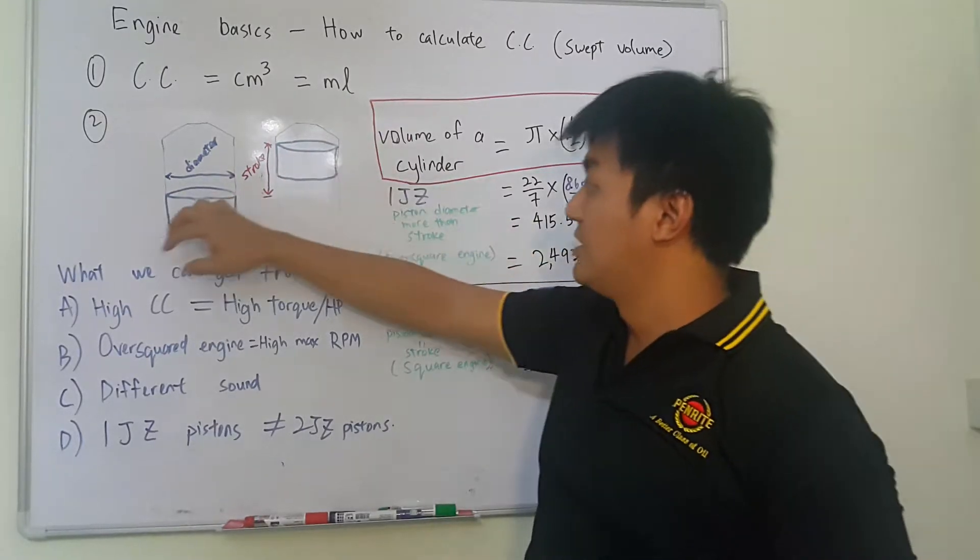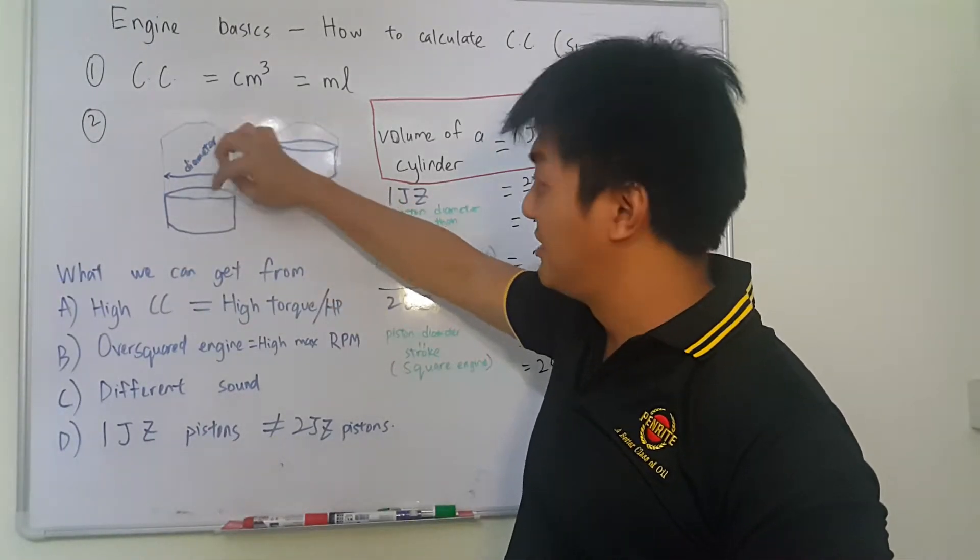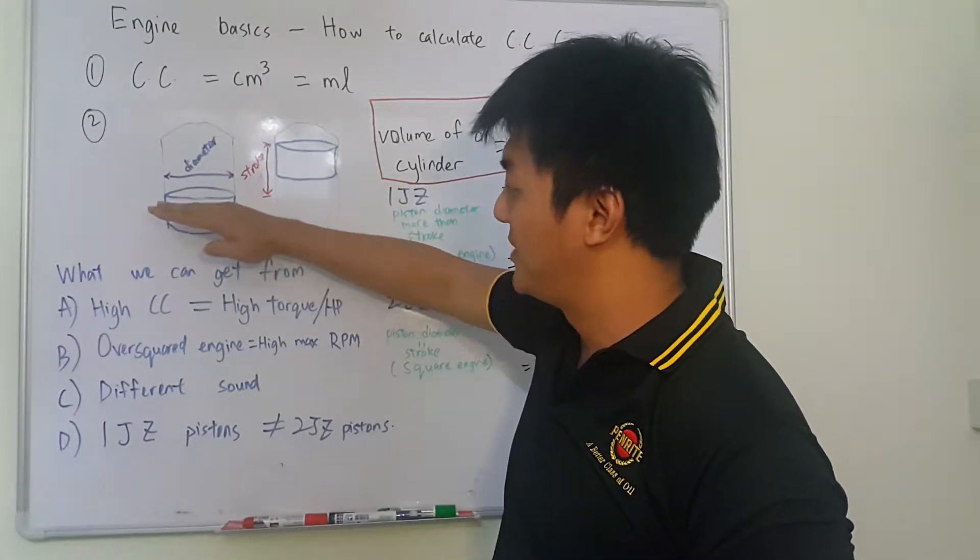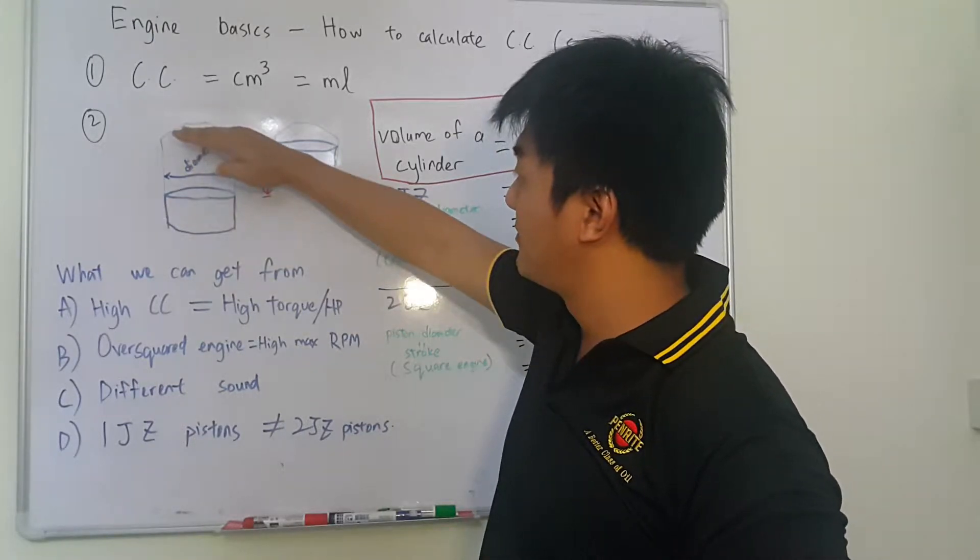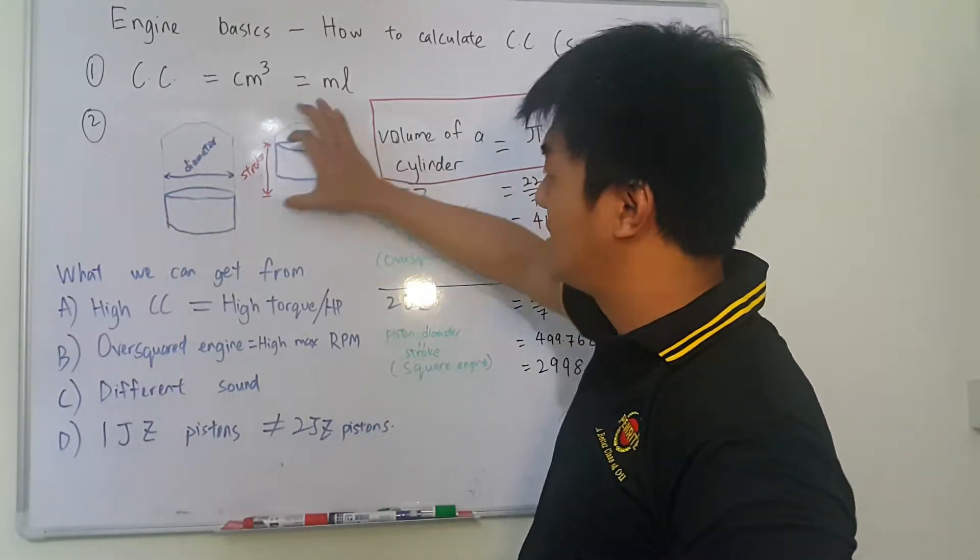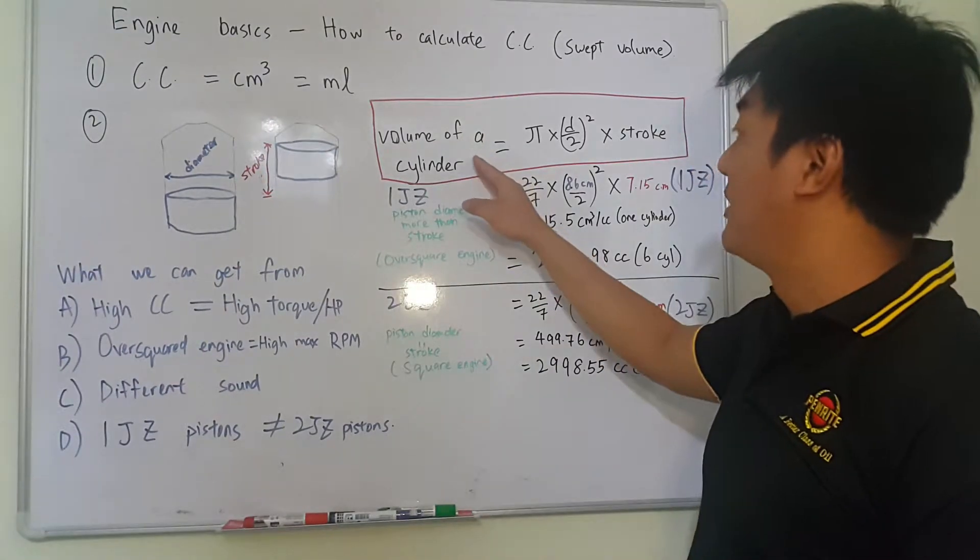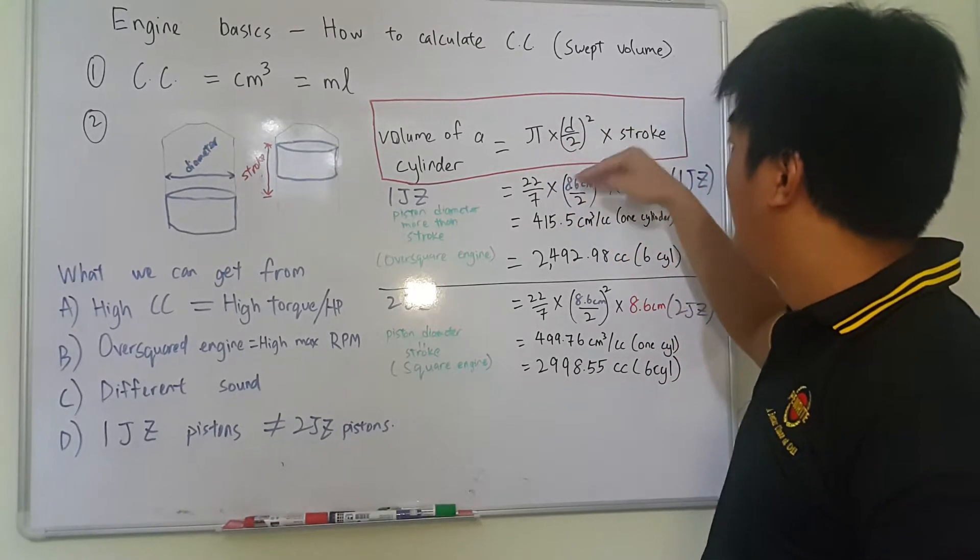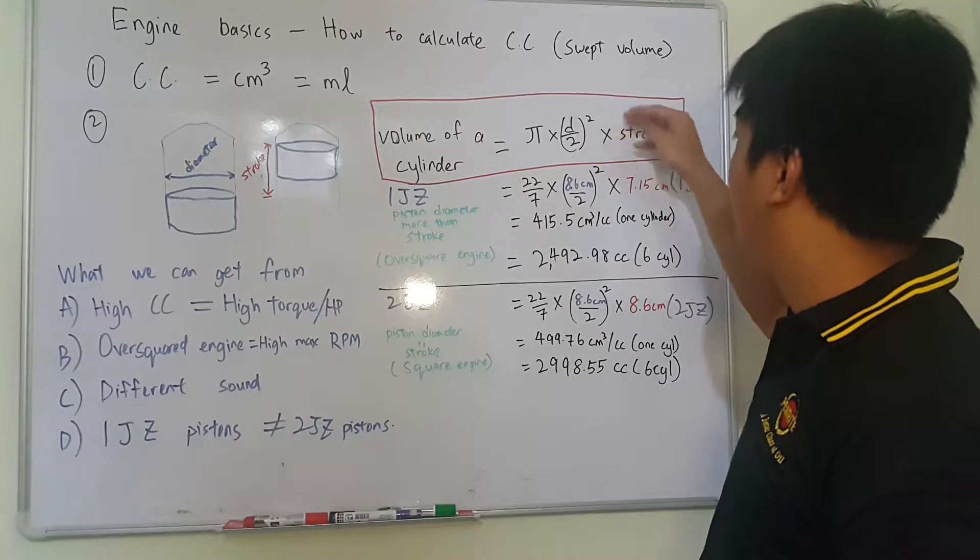Alright, so the second thing is we need to know from this rough sketch, this one is the diameter of the piston and this one from the piston travels from the bottom dead center, goes to the top of the center, this one we call it the stroke. Simple math, volume of a cylinder is just π times d over 2 squared, d is diameter of the piston, times stroke.